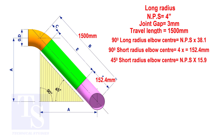To calculate the elbow center of a 45 degree long radius elbow, multiply the nominal pipe size by 15.9. The answer is 63.6 millimeters.